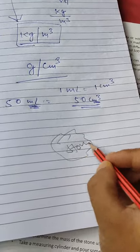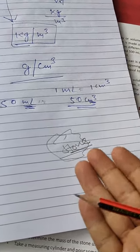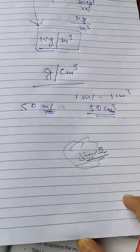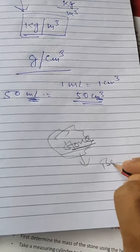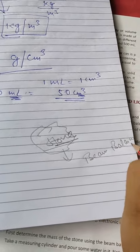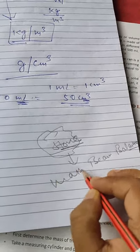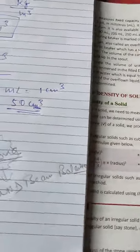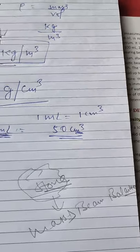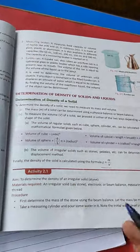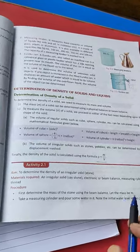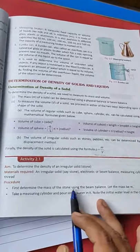For irregular solids, like a piece of stone, we don't know the shape, so we cannot apply any formula to find volume. The mass can be found easily with a beam balance. But volume cannot be found by formula, so we use the water displacement method. This is described in Activity 2.1 in the book: how to determine the density of an irregular solid such as a stone.